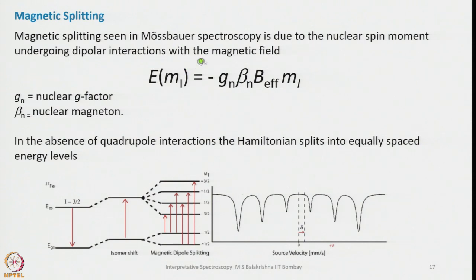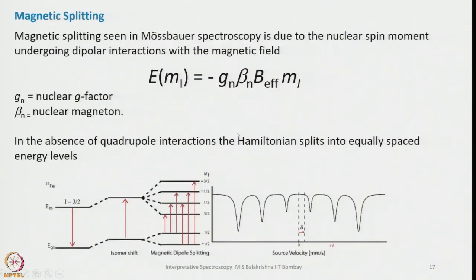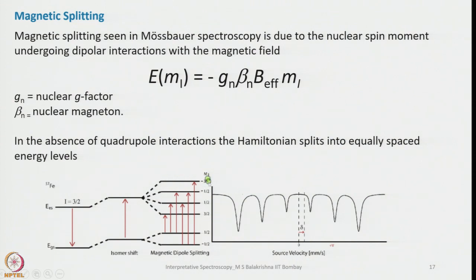Magnetic splitting seen in Mössbauer spectroscopy is due to the nuclear spin moment undergoing dipolar interactions with the magnetic field, described by H = −g_n β_n B_eff · I. Here g_n is the nuclear g-factor and β_n is the nuclear magneton. In the absence of quadrupole interaction, the Hamiltonian splits into equally spaced energy levels. For iron-57 in the ground state (I = 1/2) and excited state (I = 3/2), the ground state splits into −½ and +½, while the excited state splits into −3/2, −1/2, +1/2, +3/2, resulting in 6 transitions that are equally spaced.